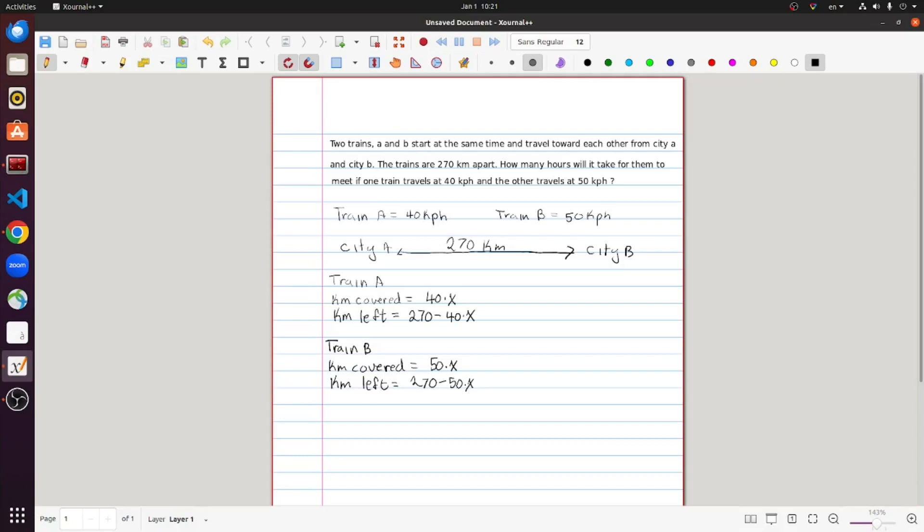And train B would meet train A if train B has covered the distance that's left for train A to cover. That is, for me, the easiest way to visualize it.